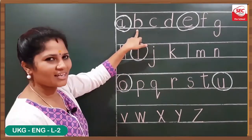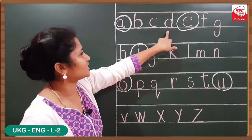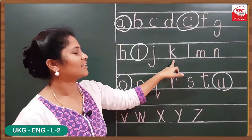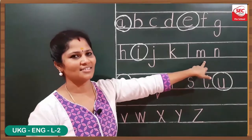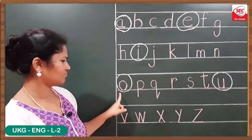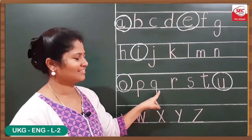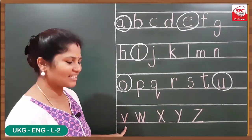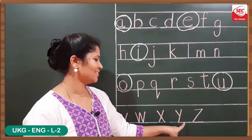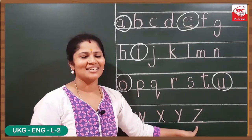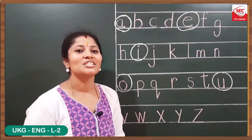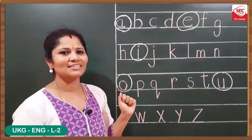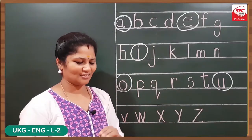How many consonants? Let us count: one, two, three, four, five, six, seven, eight, nine, ten, eleven, twelve, thirteen, fourteen, fifteen, sixteen, seventeen, eighteen, nineteen, twenty, twenty-one. So we have twenty-one consonants and five vowels.